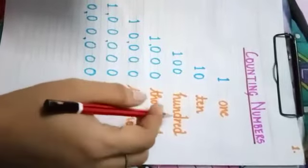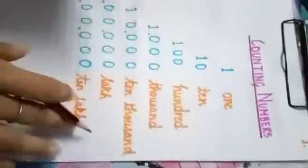So when we are counting by ones, tens, hundreds, thousands, ten thousands, lakh or ten lakh, we are using the Indian number system.